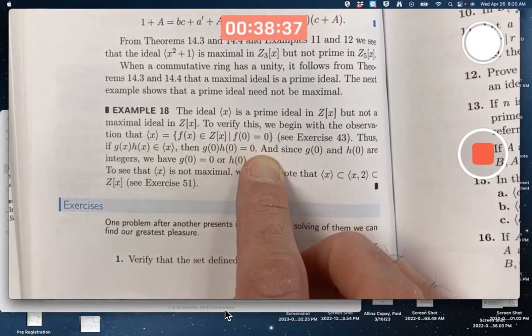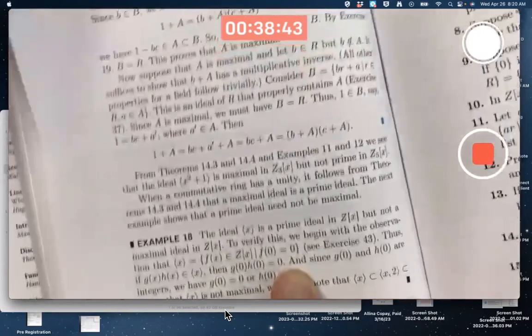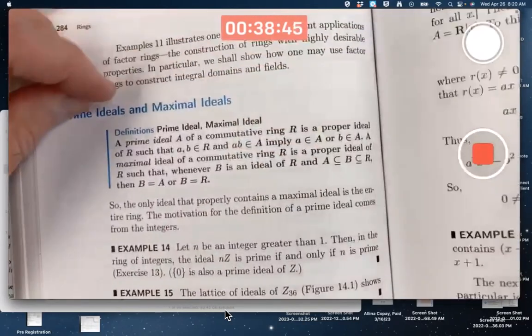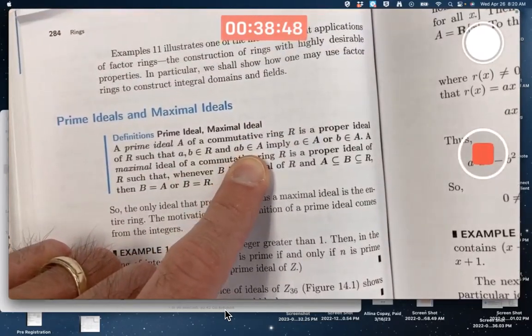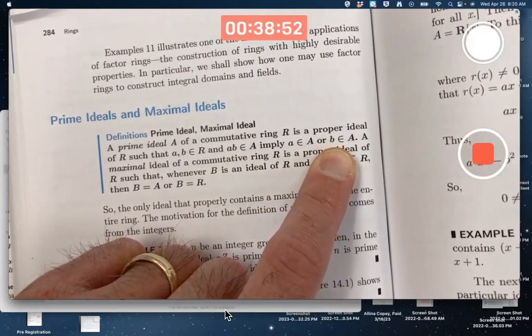So what are we trying to do here? We're trying to verify first of all that this is a prime ideal. What does prime ideal mean? Once again it means if a product of two things is in the ideal, then one or the other of the things is in the ideal. We've got to verify that.